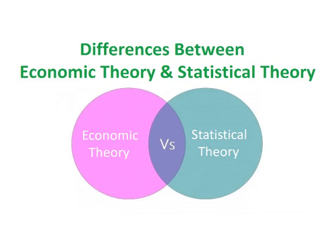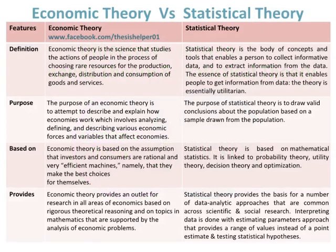Differences between Economic Theory and Statistical Theory. Economic theory is the science that studies the actions of people in the process of choosing rare resources for the production, exchange, distribution and consumption of goods and services. Statistical theory is the body of concepts and tools that enables a person to collect informative data and to extract information from the data. The essence of statistical theory is that it enables people to get information from data.